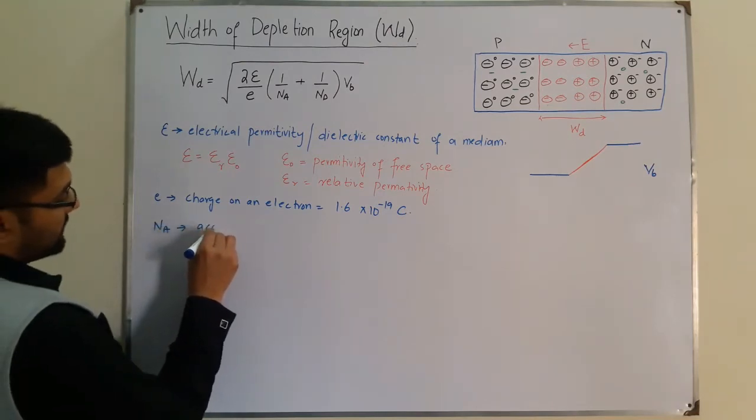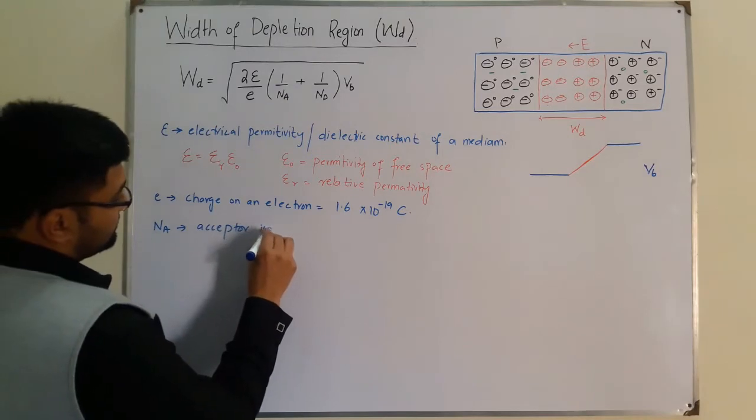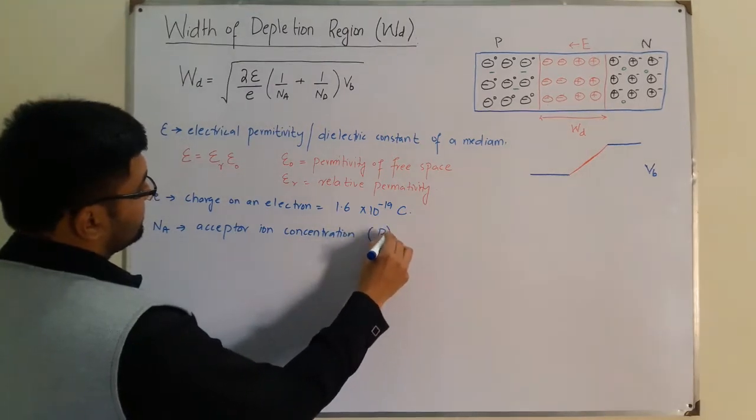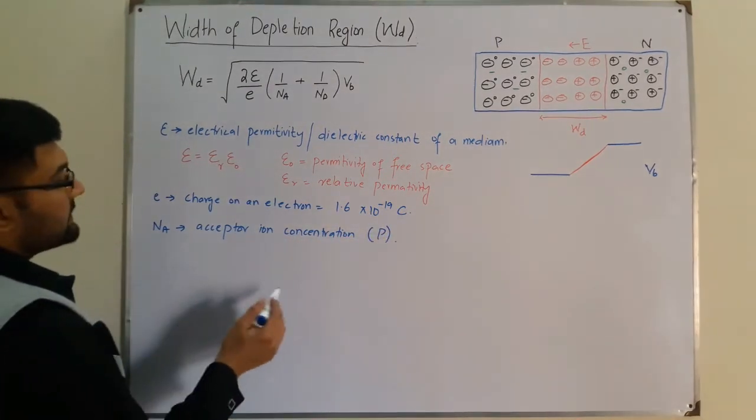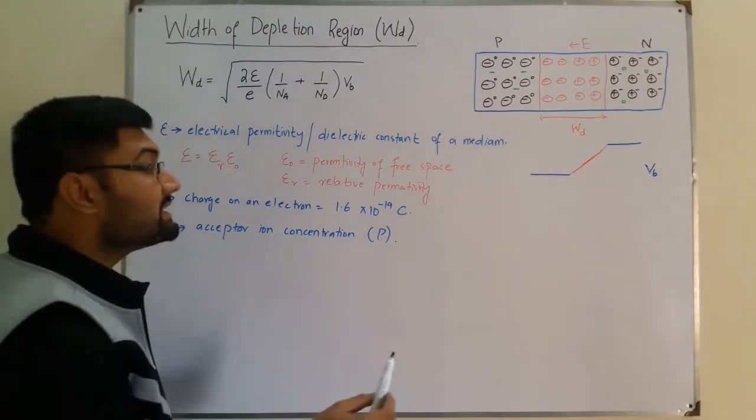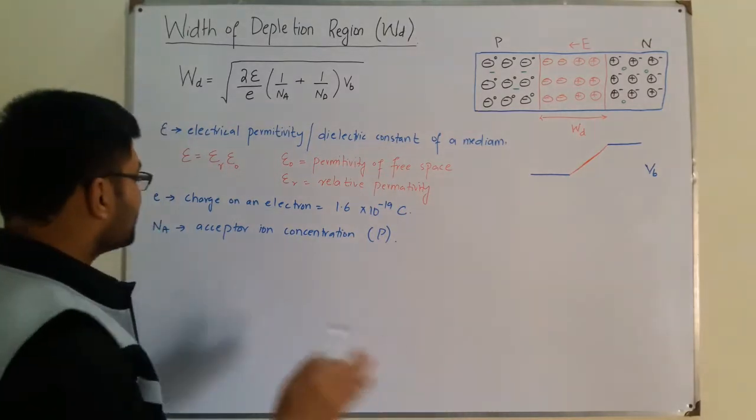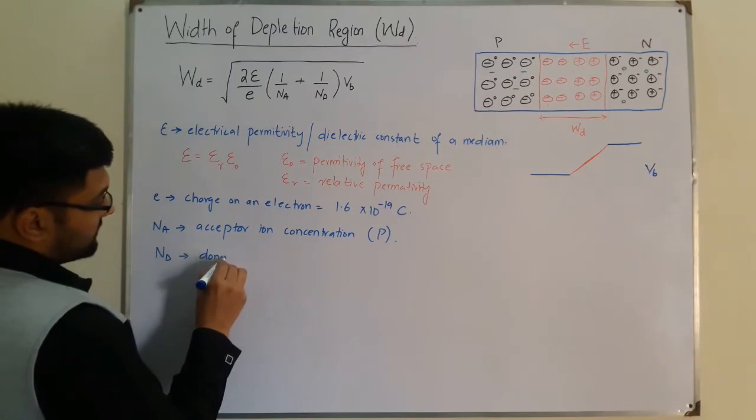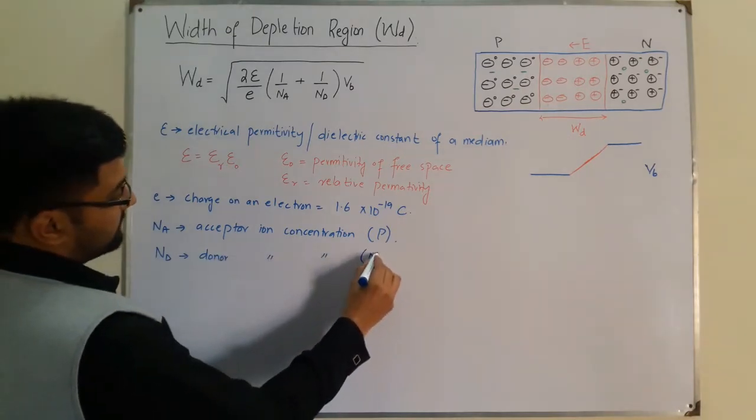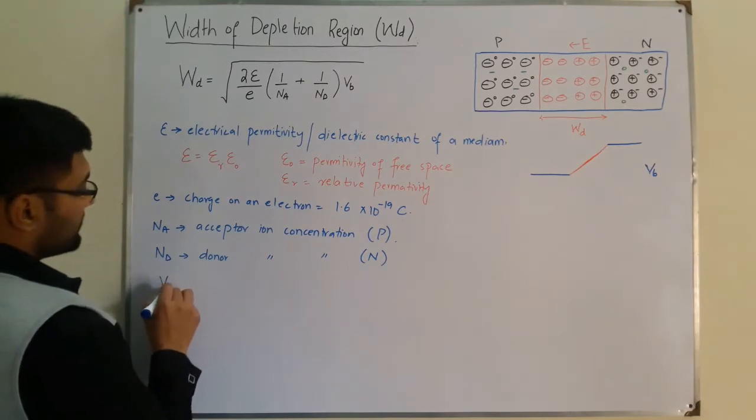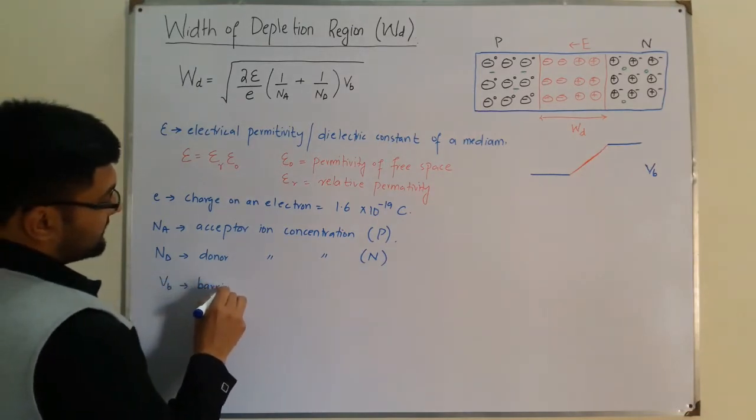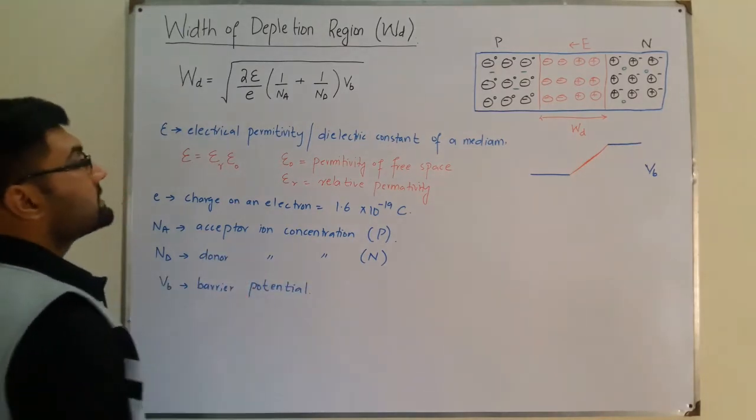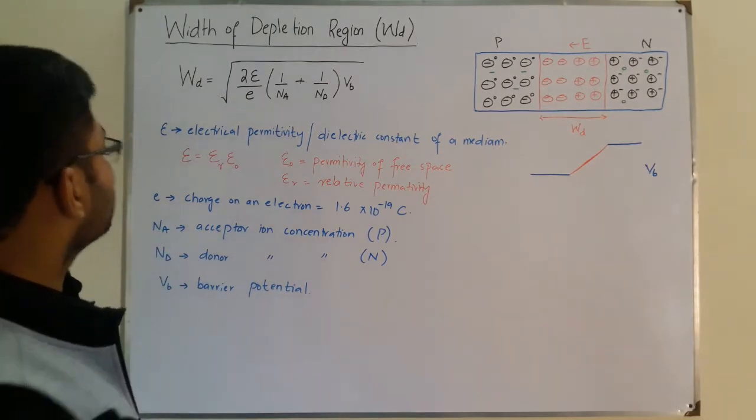NA is the acceptor ion concentration, which is on the P side. If you're given the concentration on the P side, that means this NA. Similarly, ND is the donor ion concentration on the N side. VB is the barrier potential we've seen in the previous video.